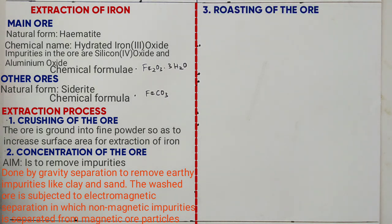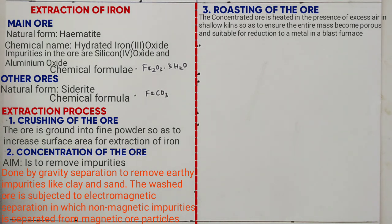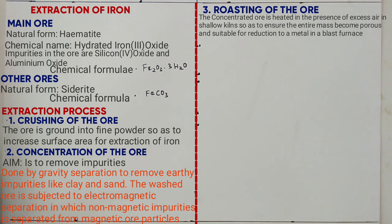In electromagnetic separation, non-magnetic impurities are separated. Step 3 is roasting of the ore. The concentrated ore is heated in the presence of excess air in shallow kilns. The aim is to make sure the entire mass of the ore becomes porous and suitable for reduction to metallic elements in the blast furnace.